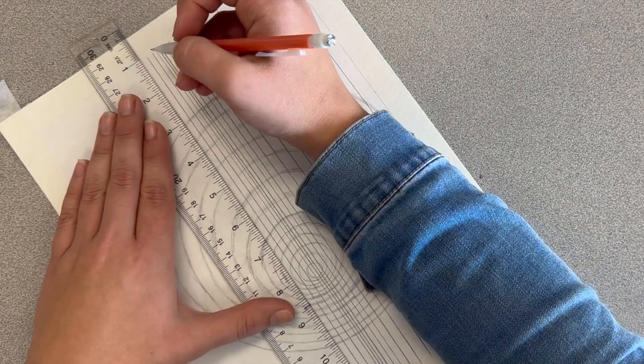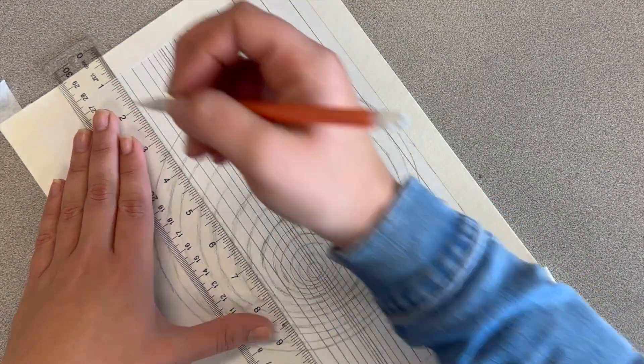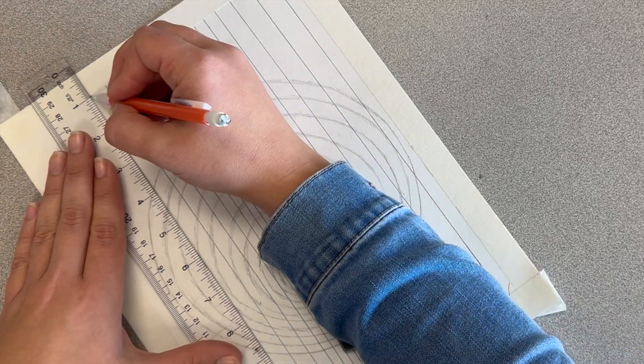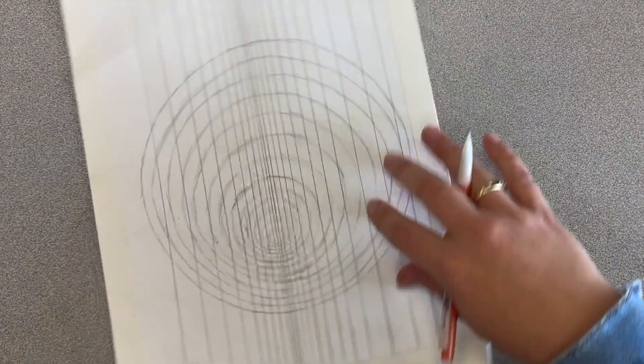Once you fill up one side of your paper, you're going to repeat this process going the other way. But the lines need to make sure that they're super close together at your center point of your circle, and as they get towards the edge of your paper, they're going to get a little bit farther apart.